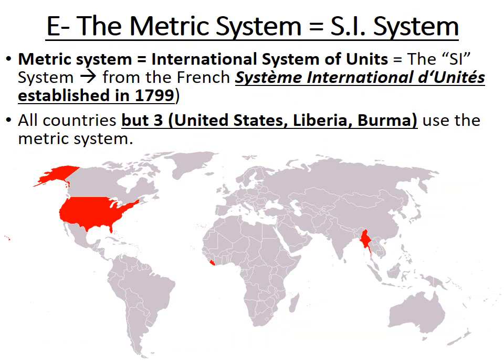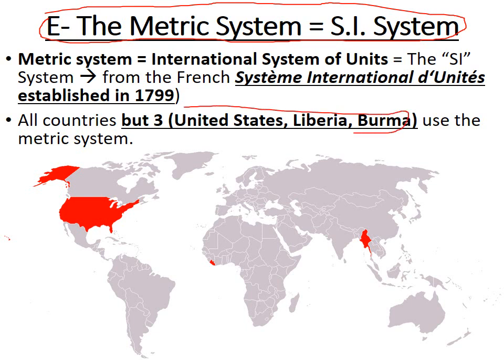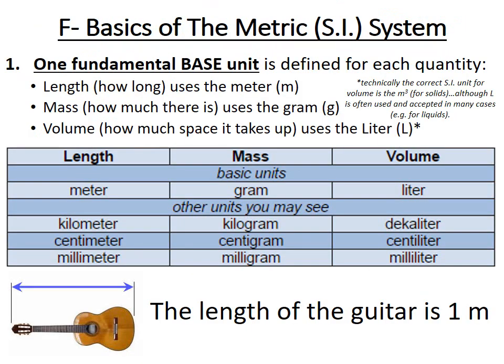To come up with that consistency, most countries in the world follow a system of measurement called the metric system, or the International System of Units. Most countries in the world do use it — there are three countries that don't, and you can see them on the map. The fact that the majority of countries use this system makes things a lot more consistent and easier to understand when purchasing things, building things, and applying measurements to practical situations.